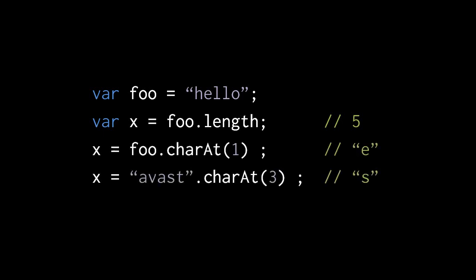Strings also act like objects in that all strings have a link to one particular shared object, which has methods useful for dealing with strings. For instance, the property charAt is a method which takes a number — an index — and returns a string consisting of just the character at that index. So if the variable foo holds the string hello, writing foo.charAt gets the property charAt from the object linked to by the string. When invoked, foo gets passed as this in that method, and 1 gets passed as the regular parameter. Since strings are indexed from 0, index 1 refers to the second character, so this returns the string e.